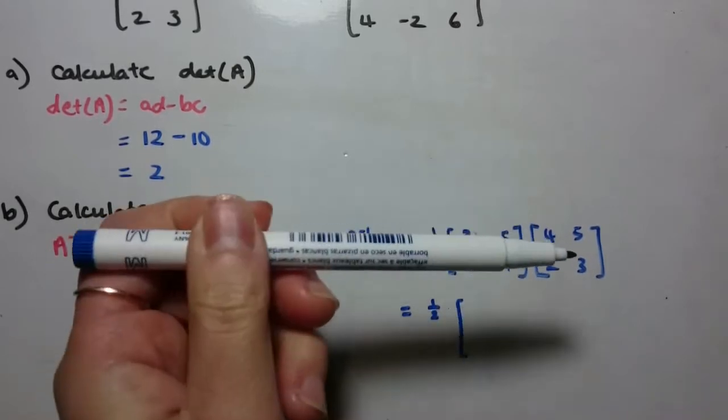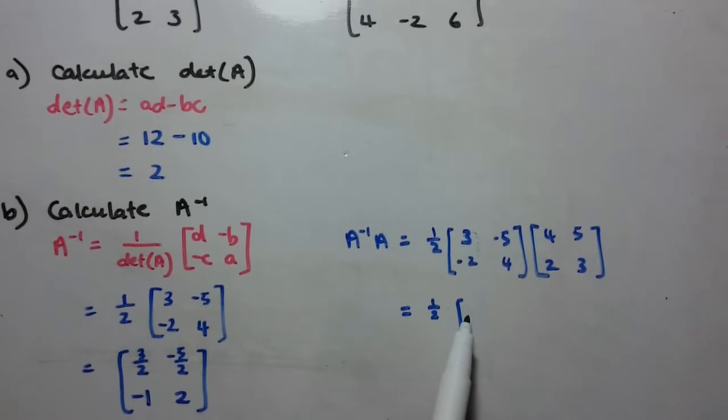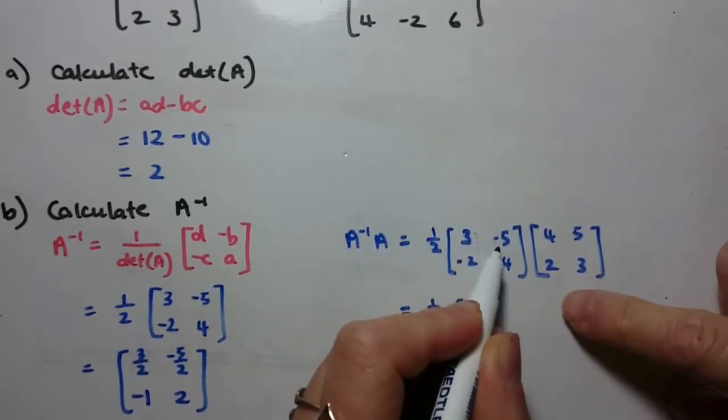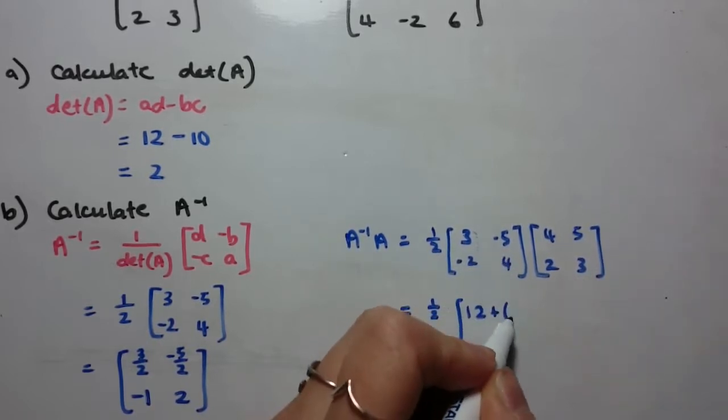So remember with matrix multiplication, we're doing row by column. So to grab that first element, I want the first row by the first column. So that's 3 times 4 is 12, plus negative 5 times 2 is negative 10.